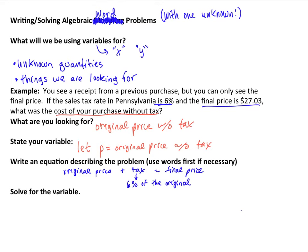So I'm just kind of writing down what I know. So if I have the original price and add 6% of that original price, then I'll have my final price.